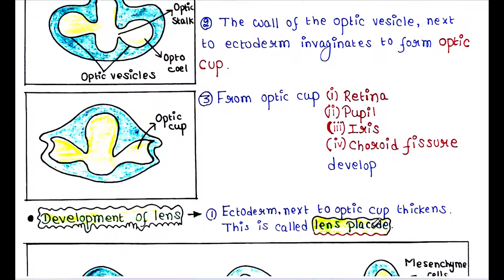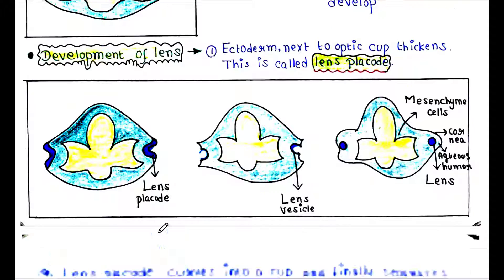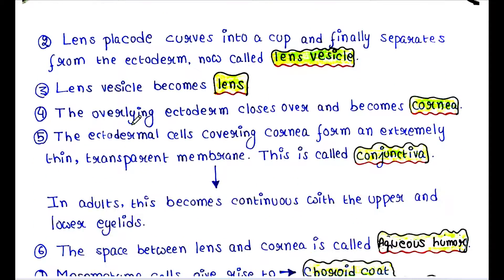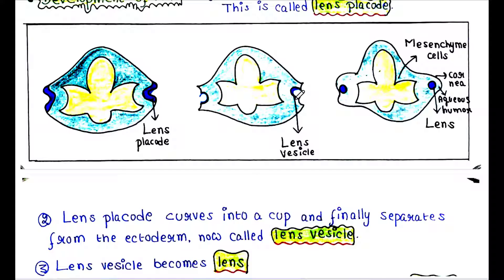Next we will see the development of the lens. The ectoderm next to the optic cup thickens and is called the lens placode. The lens placode curves into a cup and finally separates from the ectoderm — now called the lens vesicle — which becomes the future lens.